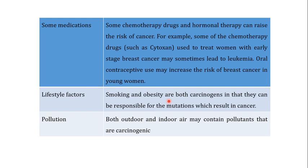Smoking and obesity have the ability to cause cancer in particular individuals and are actually responsible for mutations which result in cancer. Pollution is another type of carcinogen — both outdoor and indoor air may contain pollutants that are carcinogens and therefore have the potential to cause cancer in particular individuals. These are the broad types and different classes of carcinogens with their examples.